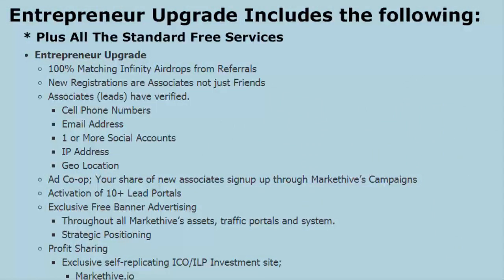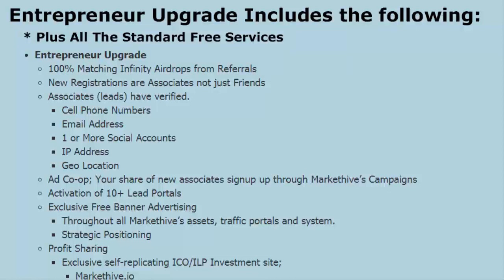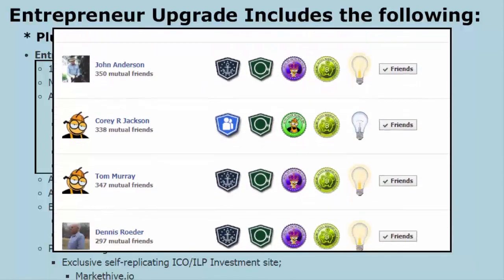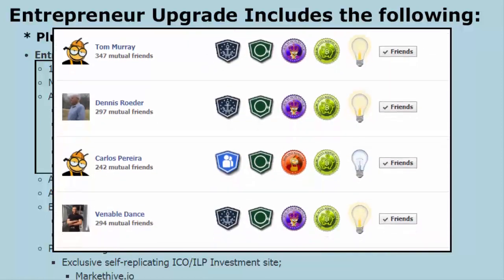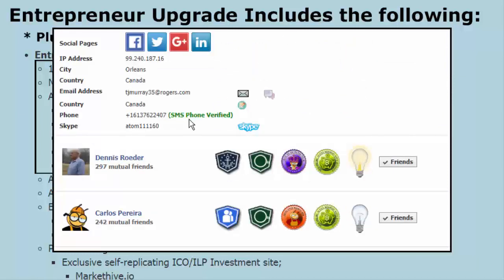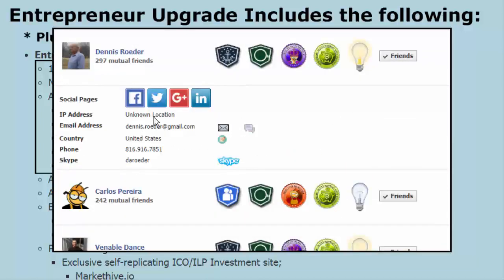With the entrepreneur program, everything you get for free is included, but the program also creates associates for you. In the free version, if you are running referrals to sign up through your profile page capture page, it's also producing associates for you — you just don't have access to their control panel. In the entrepreneur program, that access is opened up. Your associates are ready for business: you have all the connections to them, their social networks, their cell phone, their email address, their geo location, their name — it's all verified.